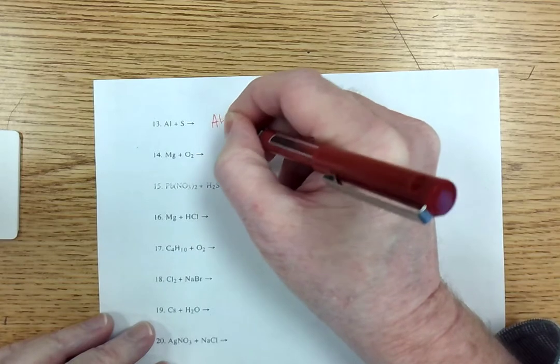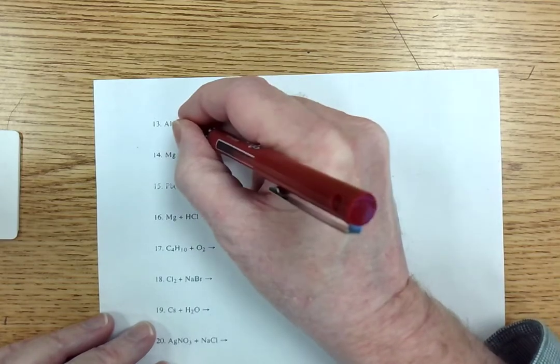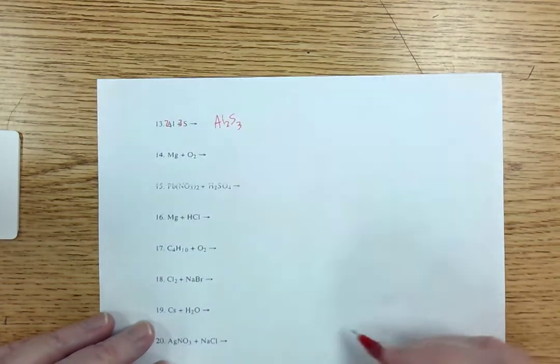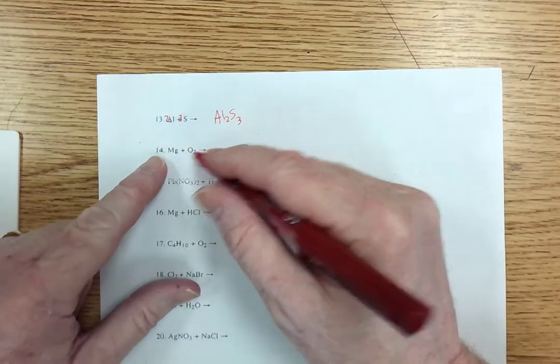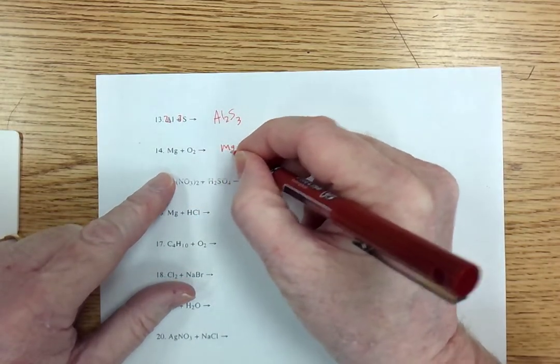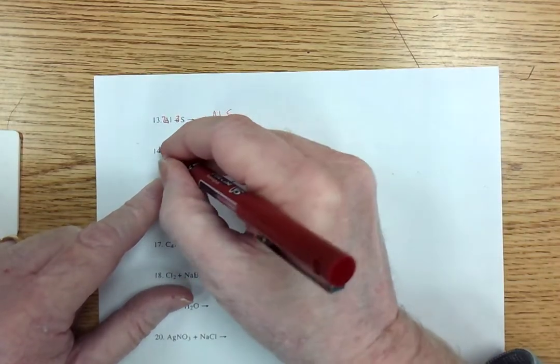So Al2S3. Put a three here. Put a two there. Put a two there. Magnesium and oxygen coming together is MgO. Put a two there and a two there.